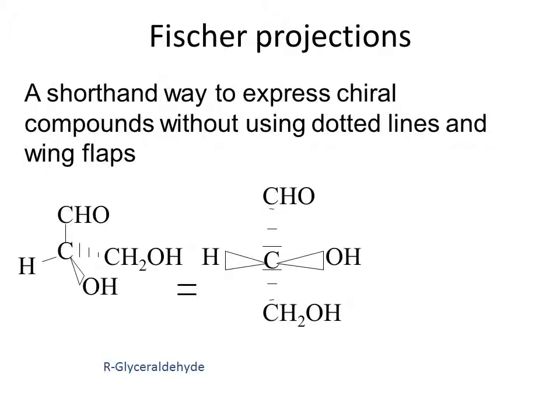I can redraw this molecule so that the hydrogen and the hydroxide are pulled up and spread apart in front of me, and then the CHO and the CH2OH are actually behind the page. This is our basis for writing a Fischer projection. In the Fischer projection, the center of the two lines is a carbon, and attached to that carbon is the hydrogen on the left and the hydroxide on the right. Anything drawn on the line going across is coming out of the page at you, and anything drawn on the line going up and down is behind the page going away from you.